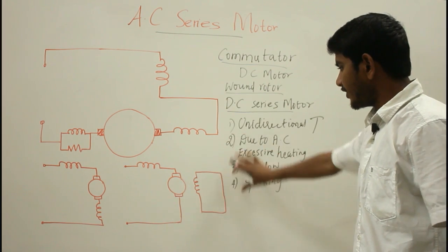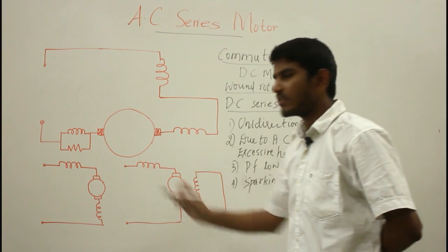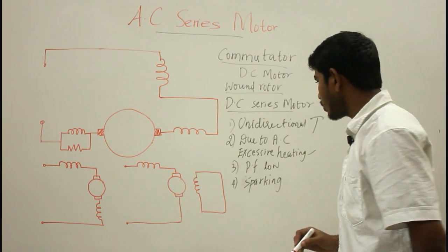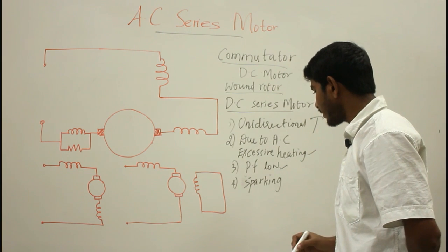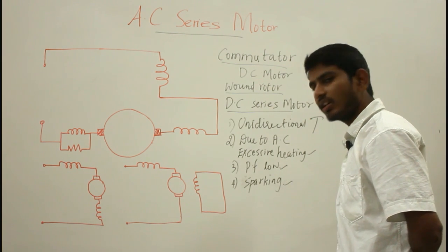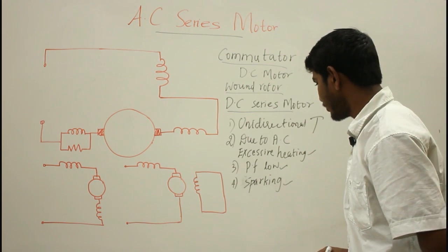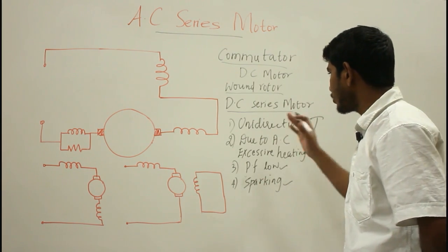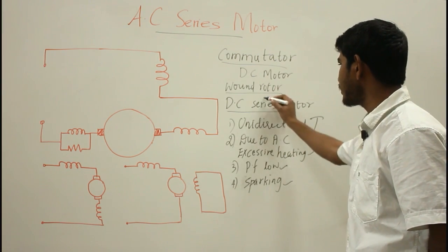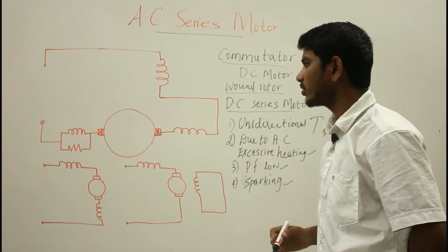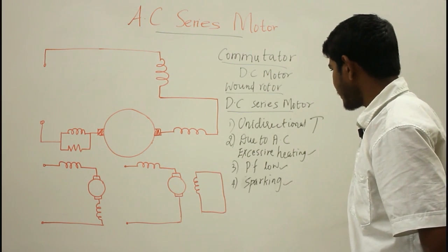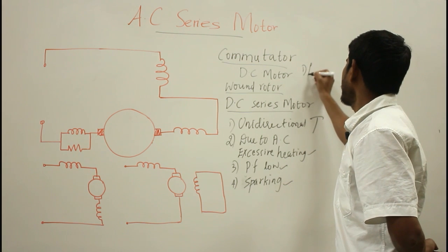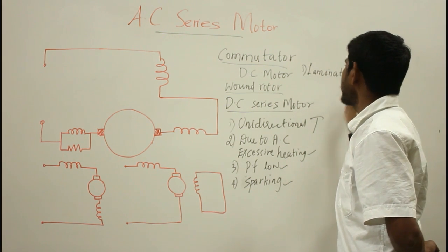To summarize, when we apply single phase AC supply to a DC series motor, we observe excessive overheating of the field and yoke due to alternating current, low power factor, and sparking at the brushes during commutation. To reduce these poor performances, certain modifications must be done to use the DC series motor as an AC series motor. The first modification is to laminate the field cores and the yoke to prevent eddy currents.